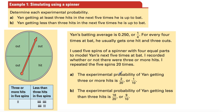The experimental probability of Yan getting three or more hits is two out of 20, one in ten. The experimental probability of Yan getting less than three hits is 18 of 20, or nine in ten.